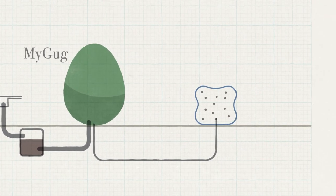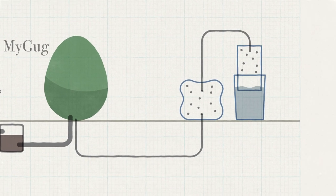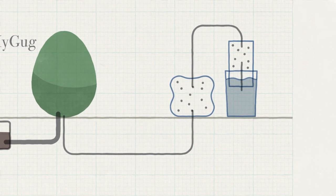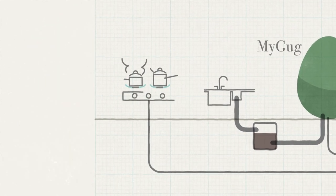Through a process of biodigestion, biogas is produced, filtered and stored. This biogas can then be used for cooking.